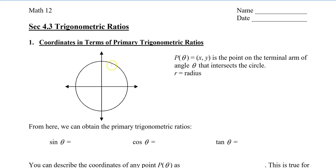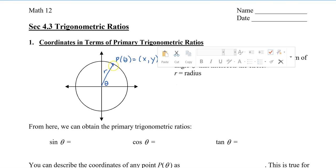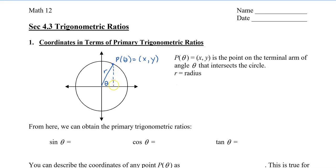Let's say that we have a point P and let's place that on the circle. P of theta has the coordinates X and Y. I'm going to draw a line here to represent the radius, and this is my angle theta. I'm going to draw a right triangle right here. Since the coordinates are X and Y, this is a distance of X, this height is a distance of Y, and the radius is R. I can link these three values using Pythagoras: X squared plus Y squared equals R squared.